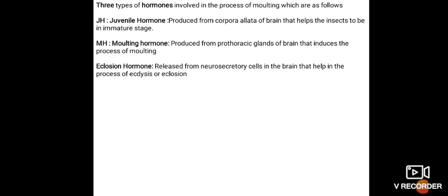There are three types of hormones that are involved in the process of molting which are as follows: JH, Juvenile Hormone, produced from corpora allata of brain that helps the insects to be in immature stage.